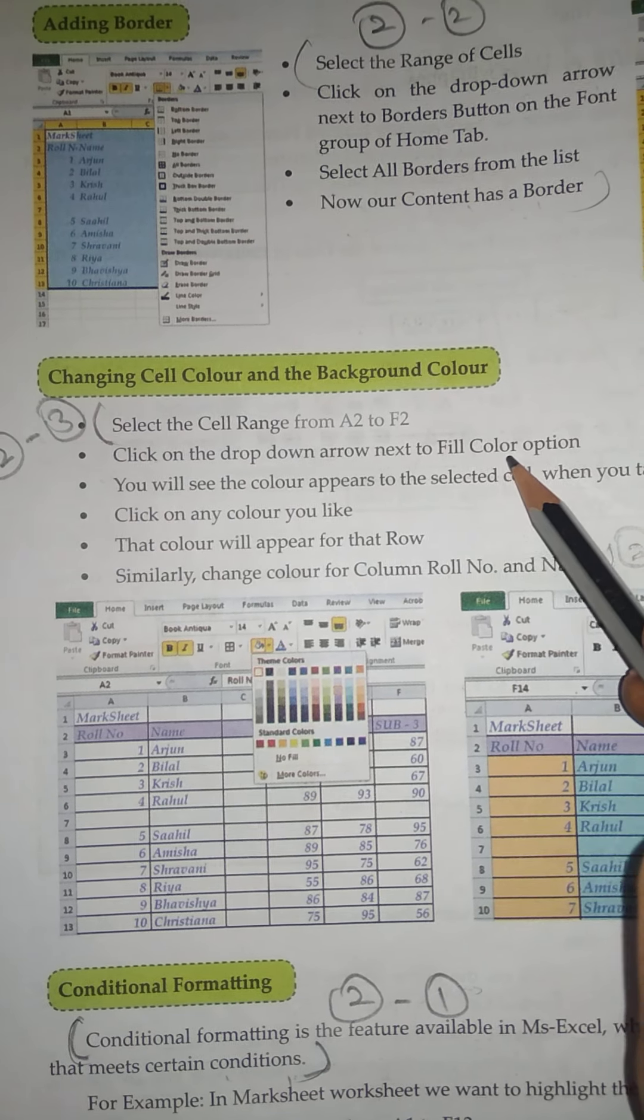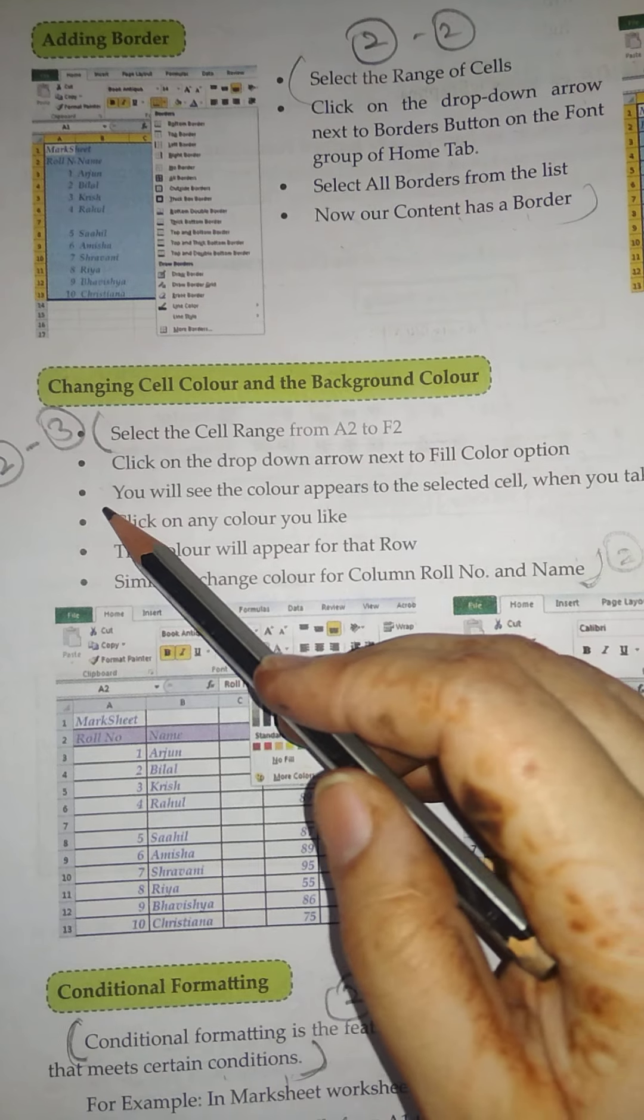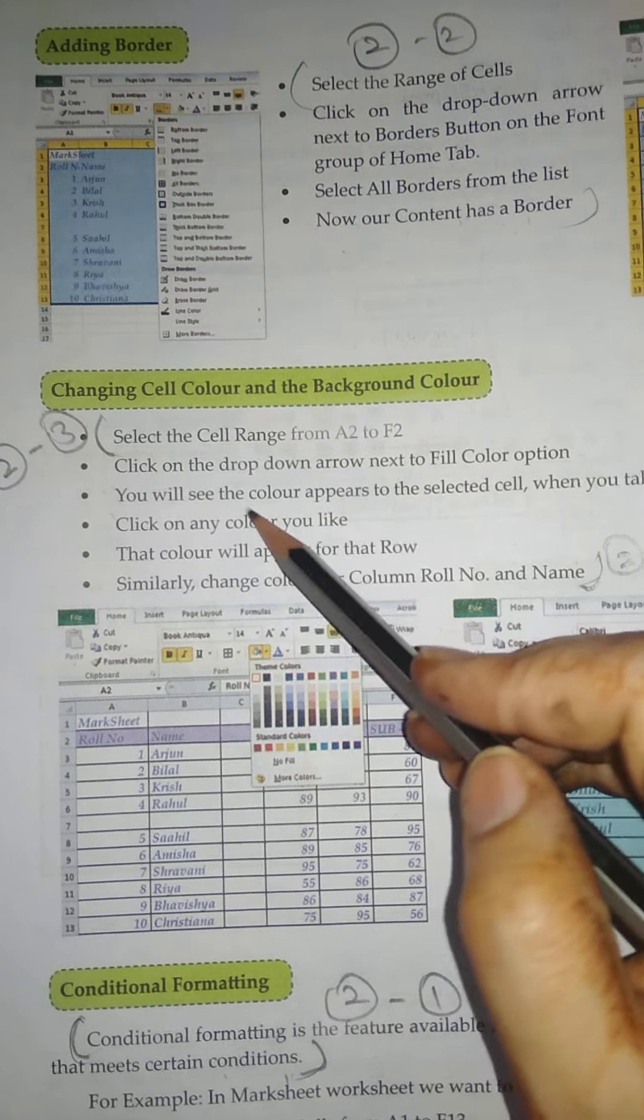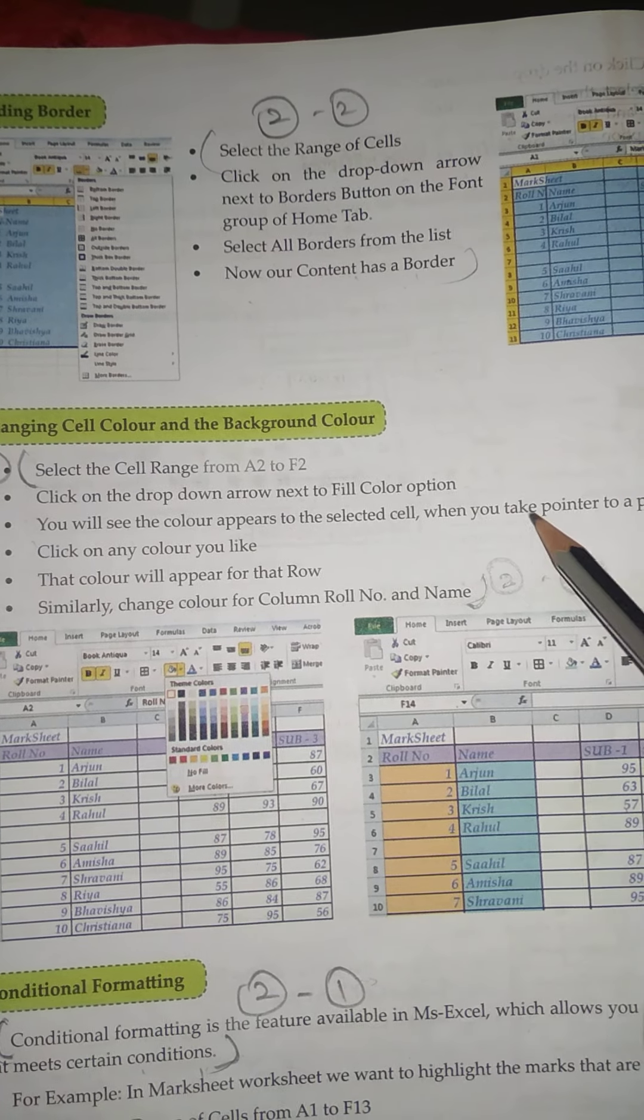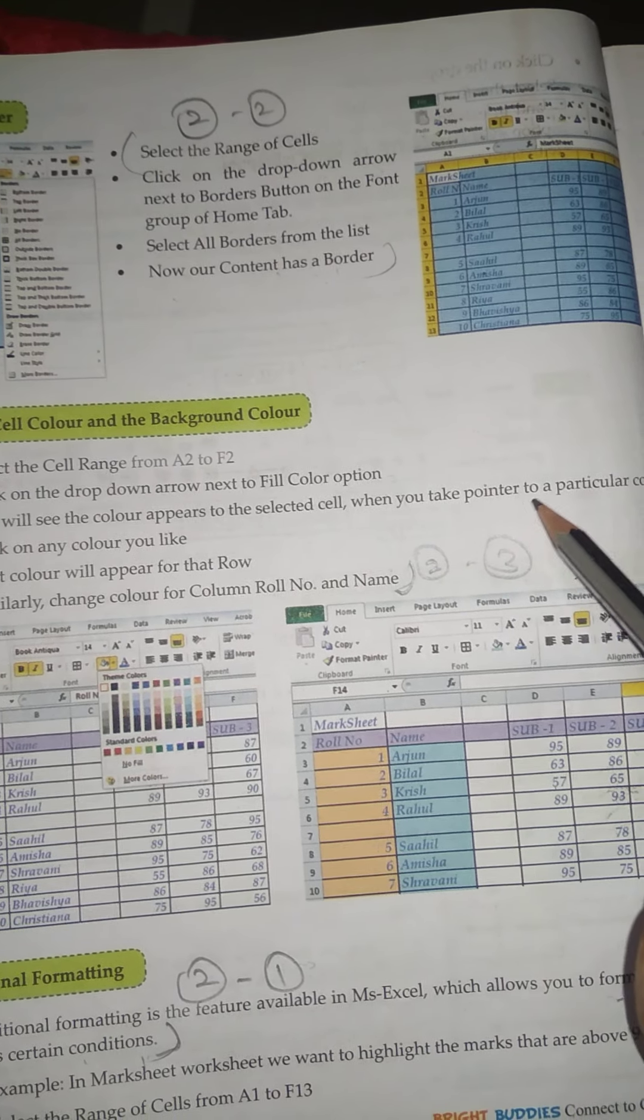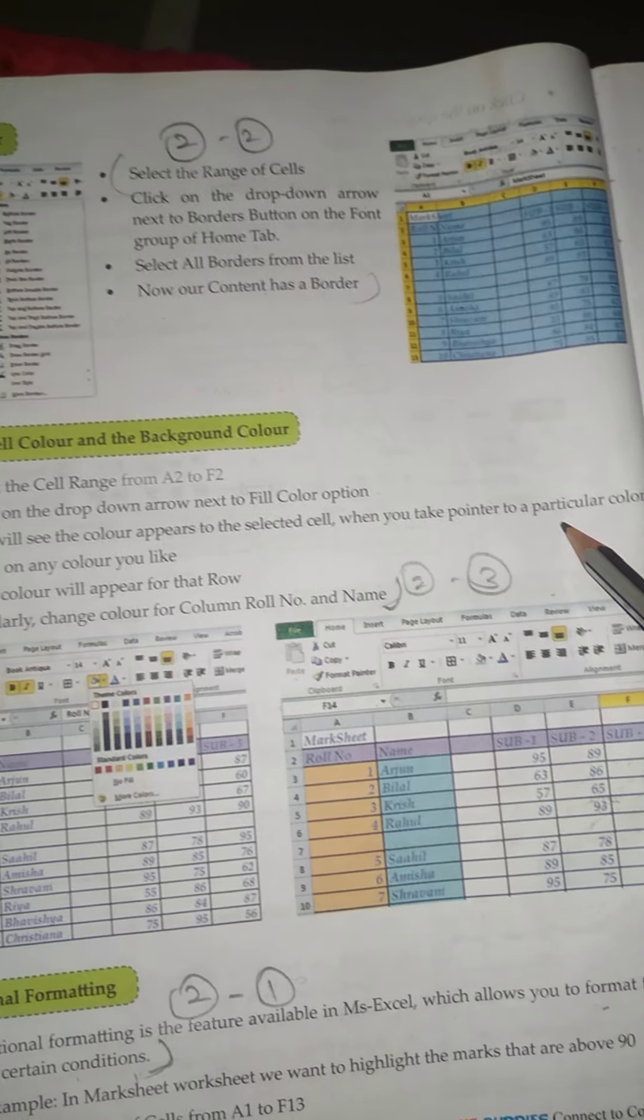Point number three: You will see the color appears to the selected cells when you take pointer to a particular color.